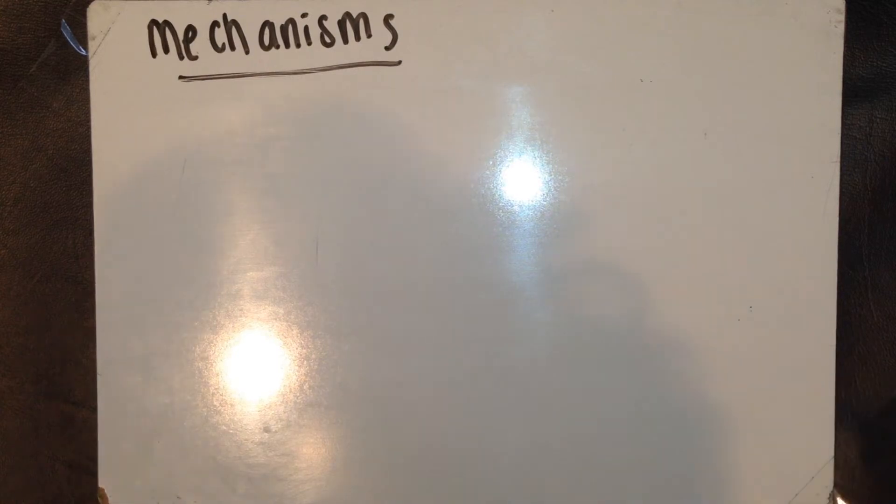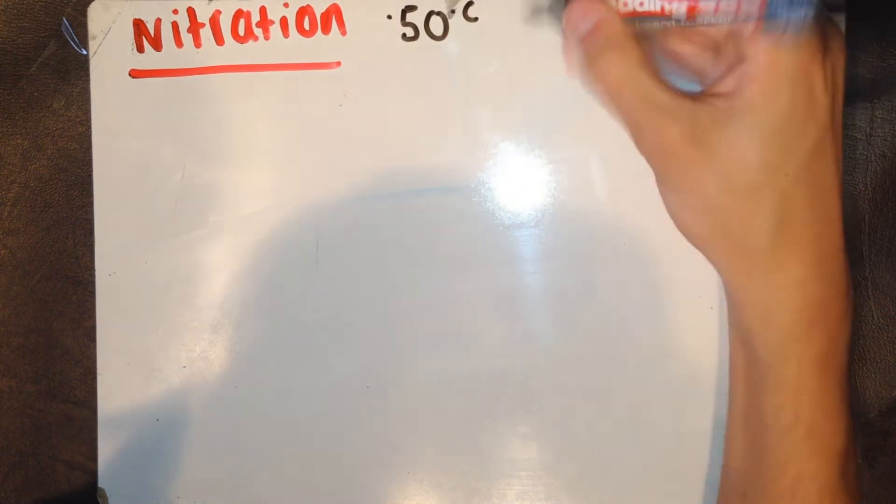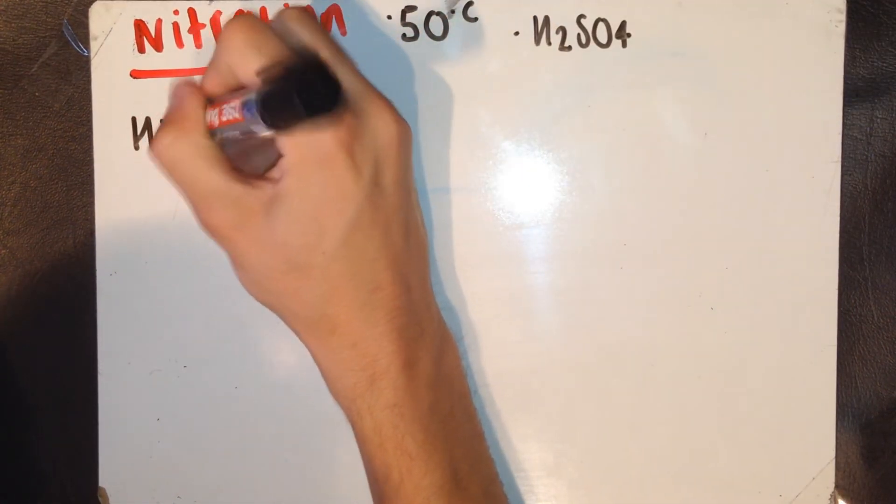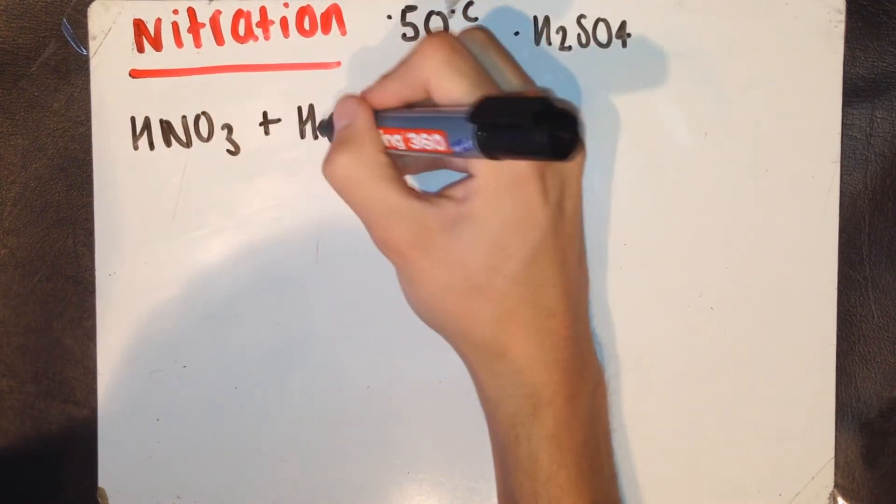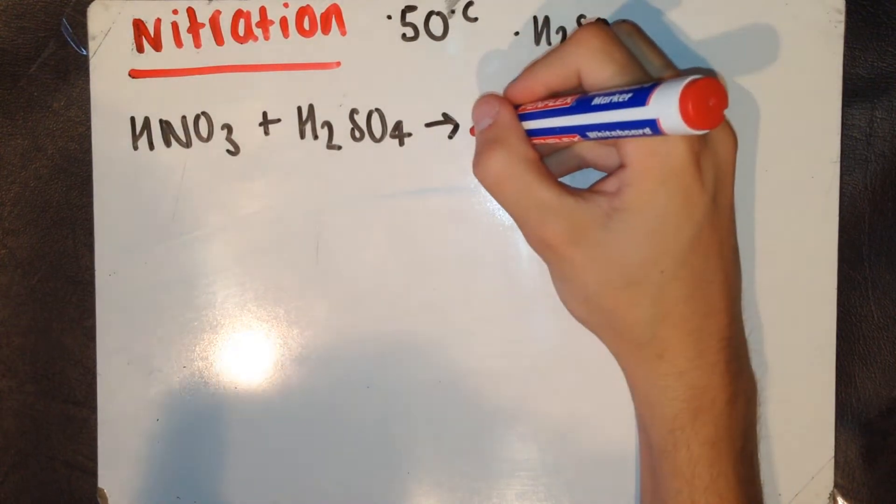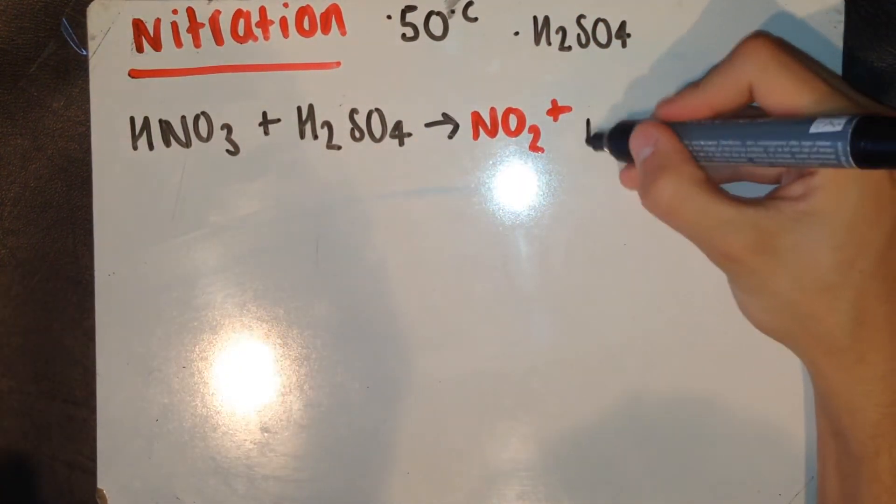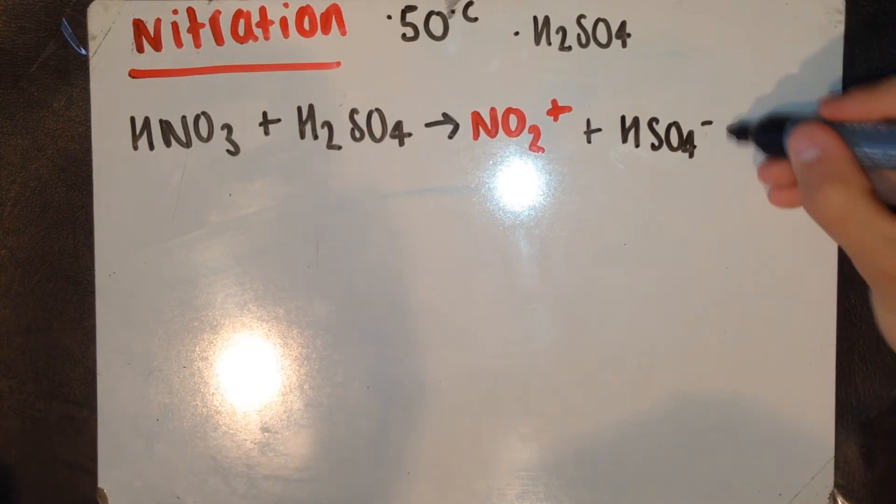So now, we're going to do the actual mechanism. First up, nitration. So, remember the conditions of nitration: 50 degrees C and a concentrated H2SO4 catalyst. The first part of the first step is the nitrating mixture, mixing both the concentrated acids HNO3 and H2SO4. This then generates NO2+, which is the electrophile in red, HSO4- and water.